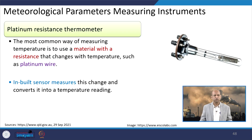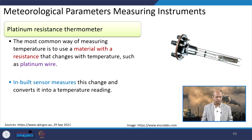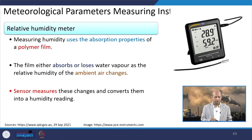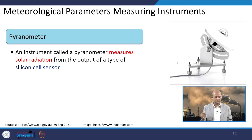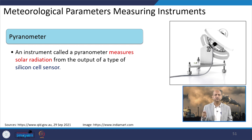The platinum resistance thermometer is used for measurement of temperature: the material's resistance changes with temperature, and the built-in sensor measures this change and converts it into a temperature reading. Similarly, instruments for measuring relative humidity and rainfall intensity are available. For the rain gauge, water collected in a funnel is stored and the rate of bucket movements plays a role in measuring rainfall. Solar radiation also has a dedicated measuring instrument — all these instruments are important in meteorological monitoring.